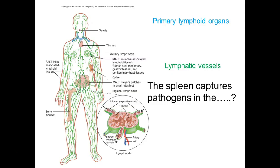Our primary lymphoid organs — where do our white blood cells, especially our lymphocytes, come from? Our bone marrow. And for B cells, that's pretty much the end of the story; they can also get educated and weeded out there. But for our T cells, one more step — where do they have to go? Thymus. So our two main primary lymphoid organs are your bone marrow and your thymus.